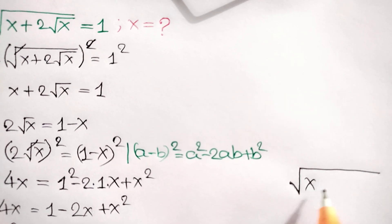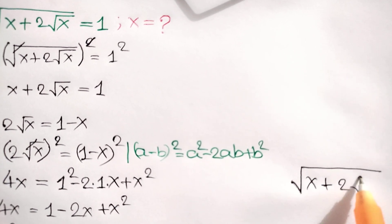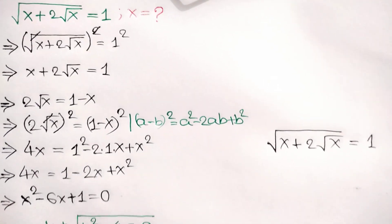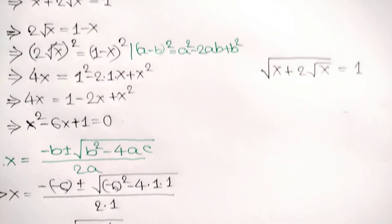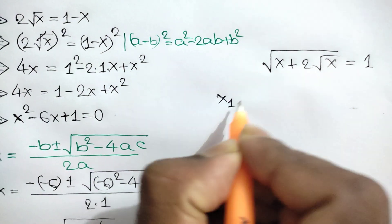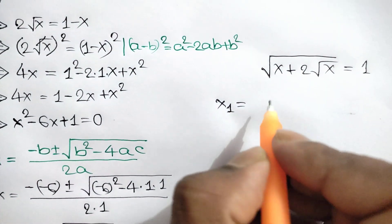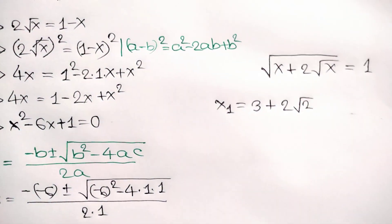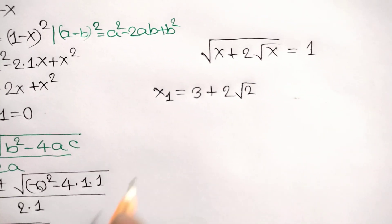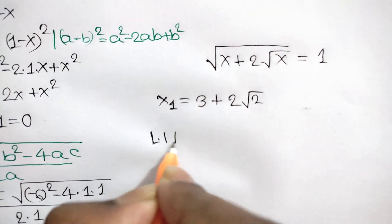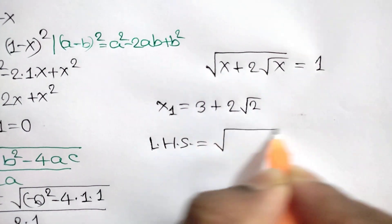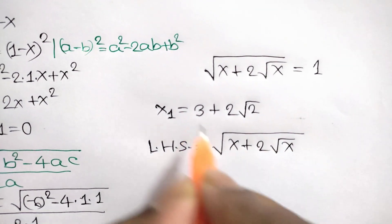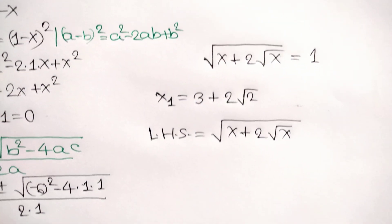We check x1 first. x1 is equal to 3 plus 2 square root of 2. The left hand side is equal to square root of x plus 2 square root of x, where x is equal to 3 plus 2 square root of 2.